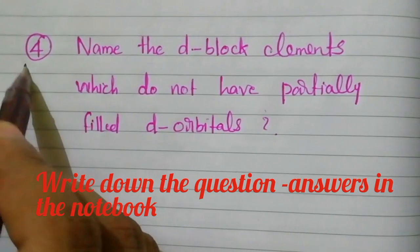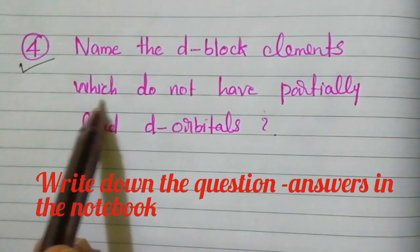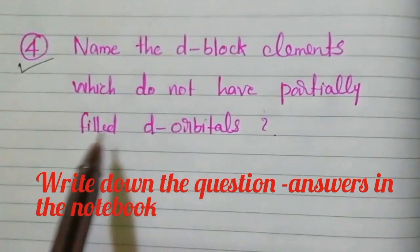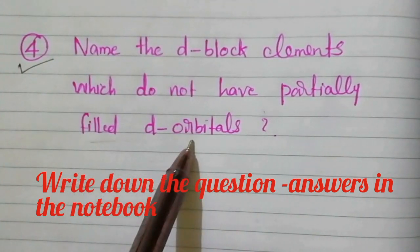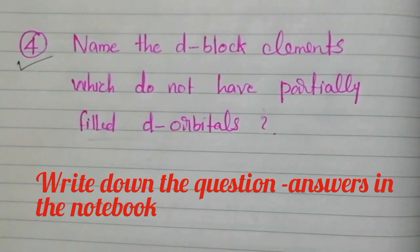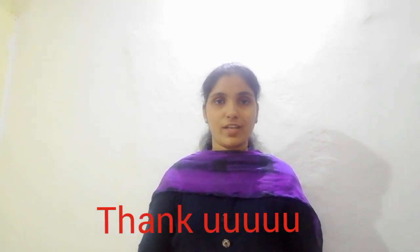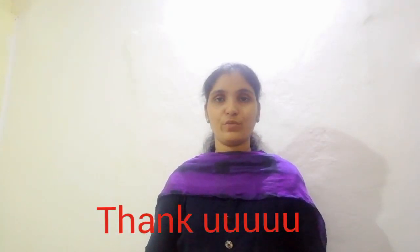Fourth question: name the D block elements which do not have partially filled D orbitals. Write down all four questions in your notebook and write the answers too. I hope it's clear, and if you have any doubts regarding this topic please mention them in the comment box. See you in the next video, and thank you for watching.